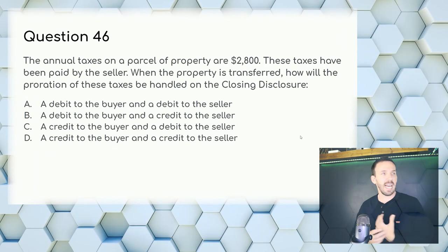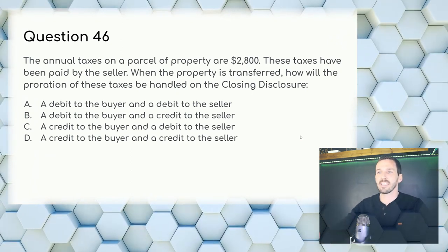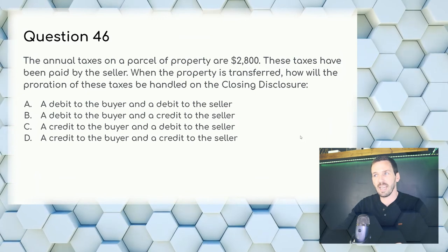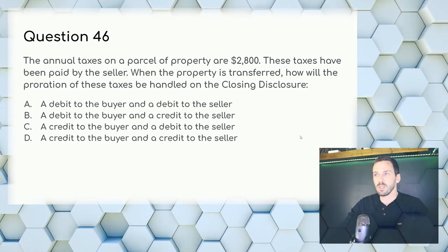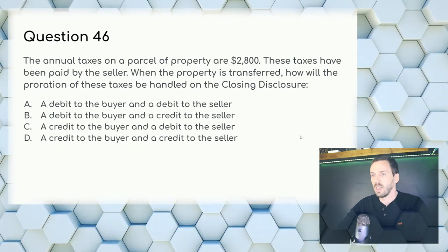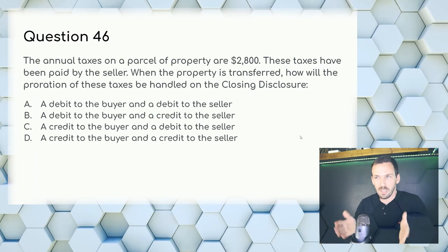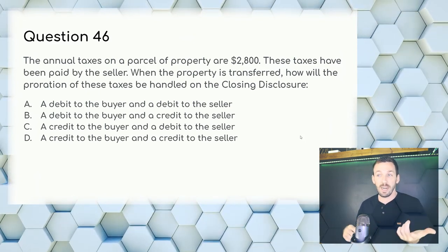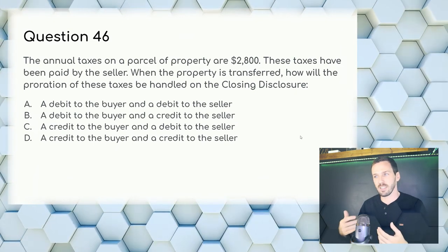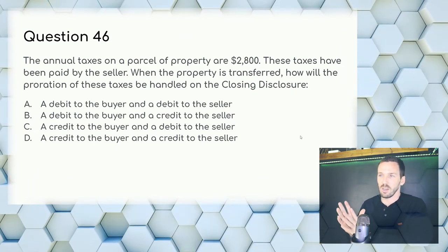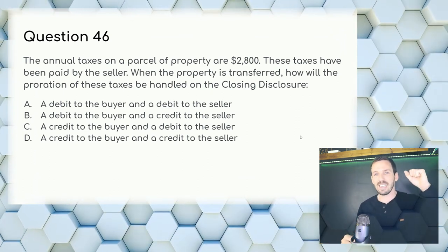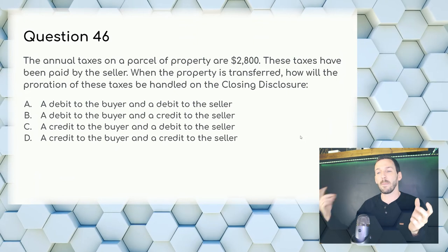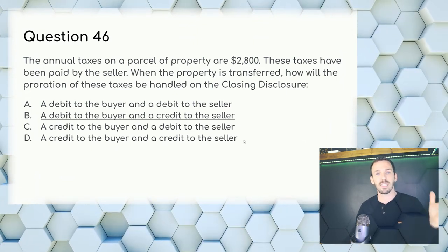Question 46: Annual taxes of $2,800 have been paid by the seller. When the property is transferred, how will the proration of these taxes be handled? The seller has already paid the entire year but didn't own the property the whole year. So the buyer pays some and the seller gets some back — you debit the buyer and credit the seller. Answer: B.